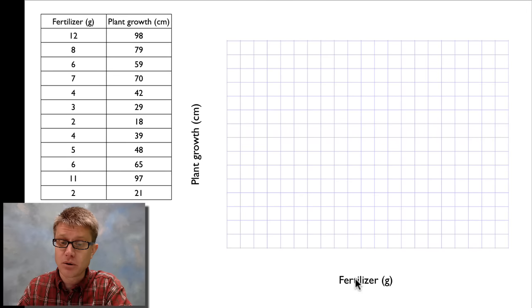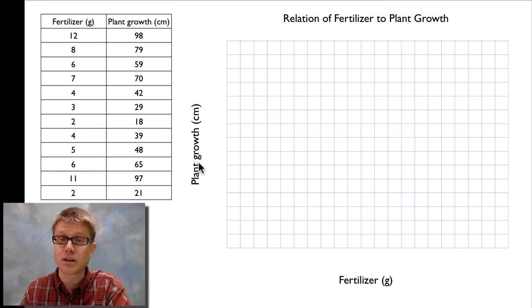Notice that I've also put what I'm measuring and then the units that I measure it in. So fertilizer is going to be measured in grams and I put that in parenthesis. Likewise plant growth is going to be on the y-axis and then I put that measuring in centimeters. The next thing I want to include is a good title, and so I could look at the relation of fertilizer to plant growth.